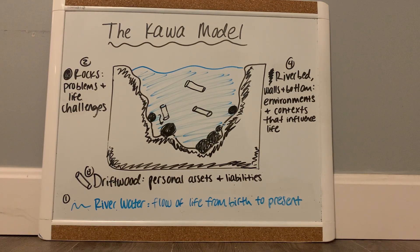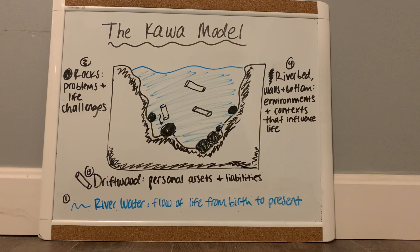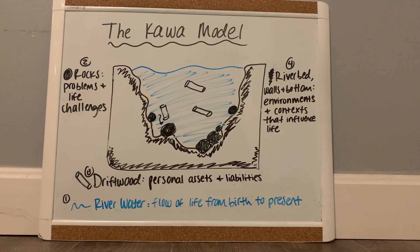The rocks are the second element. The rocks in the picture represent the client's life circumstances, challenges, and problems that they encounter throughout their life. The rocks can vary in size — in the picture there are smaller rocks and bigger rocks. The rock size depends on how much of an impact they make on life flow. These rocks can represent the client's injury, illness, or misfortunes.